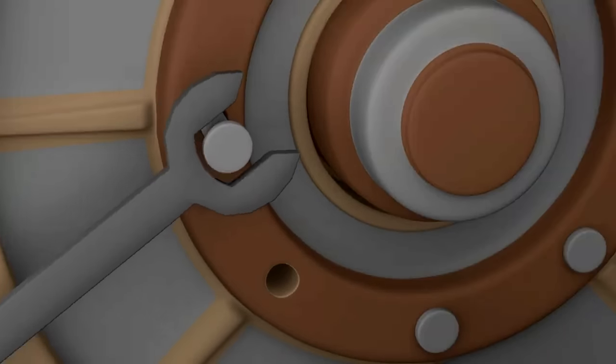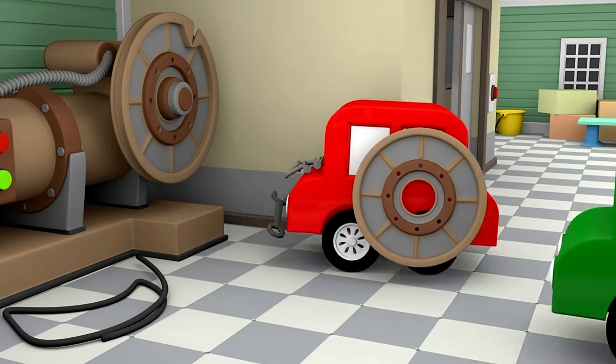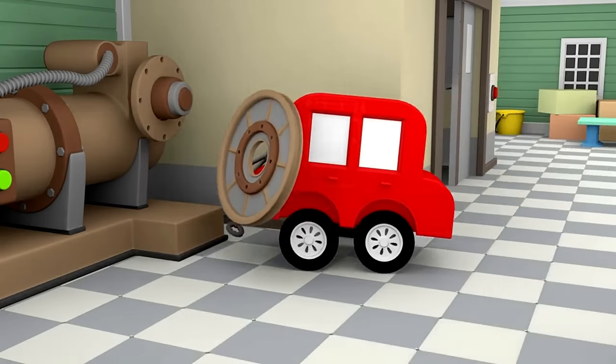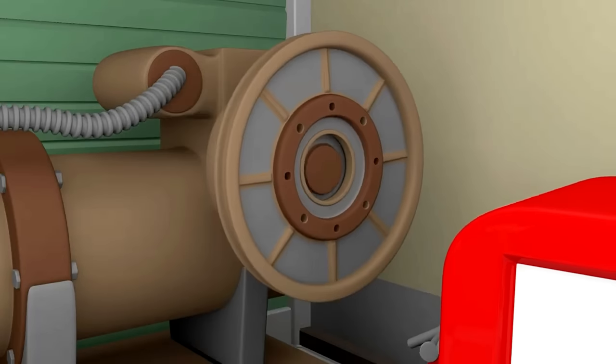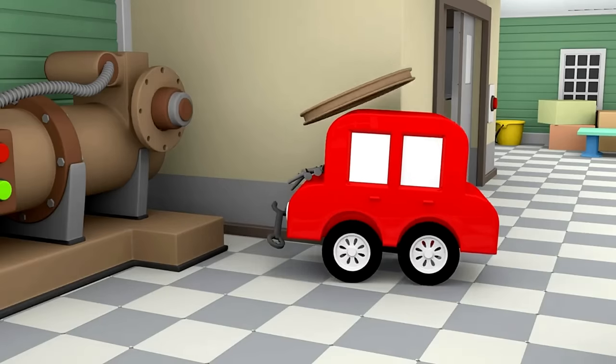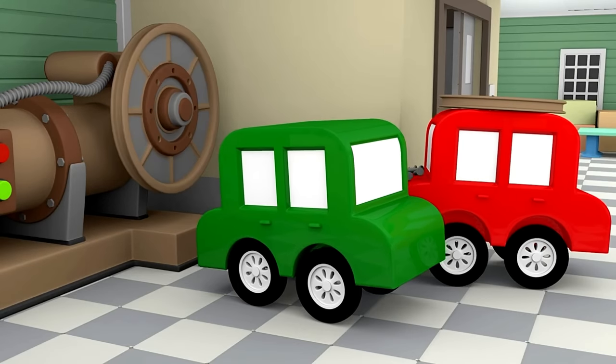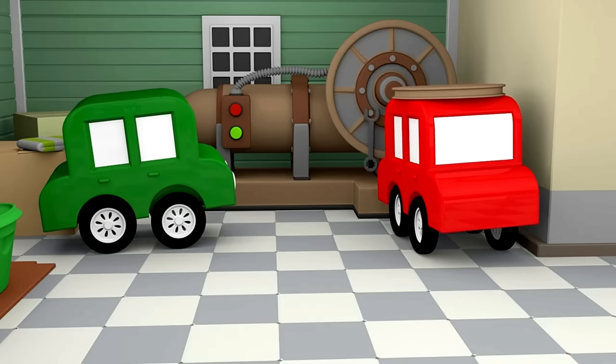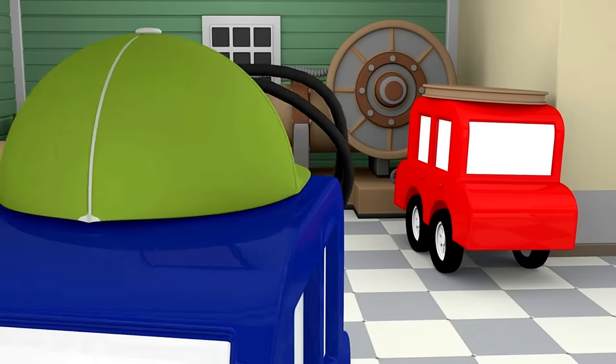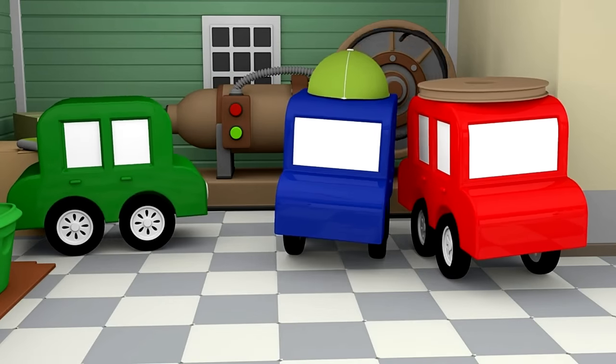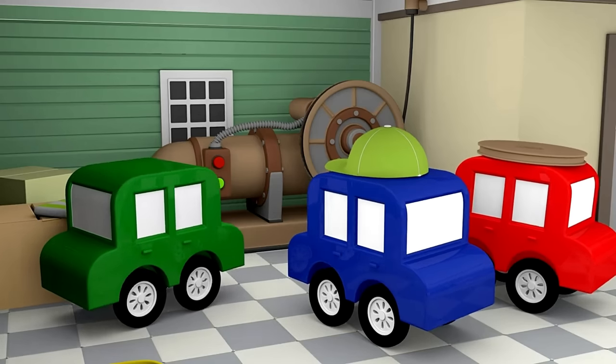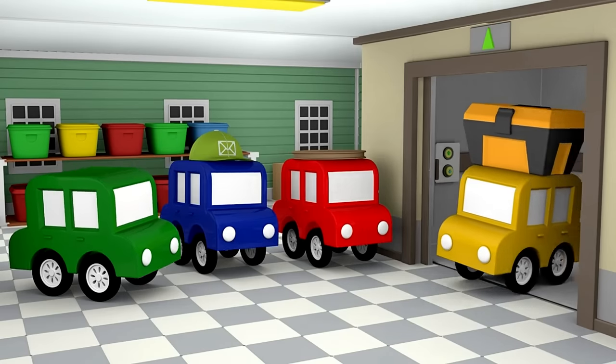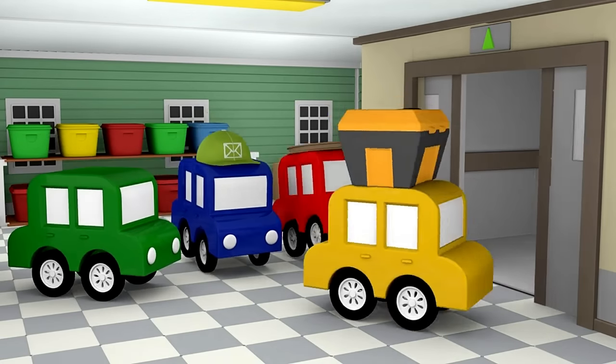The red car is undoing the bolts to take out the broken pulley. But this new pulley doesn't fit. It's too small. But this one is just right. Now to attach the cable. The lift works! It's good that the yellow car didn't panic and waited for his friends to rescue him.